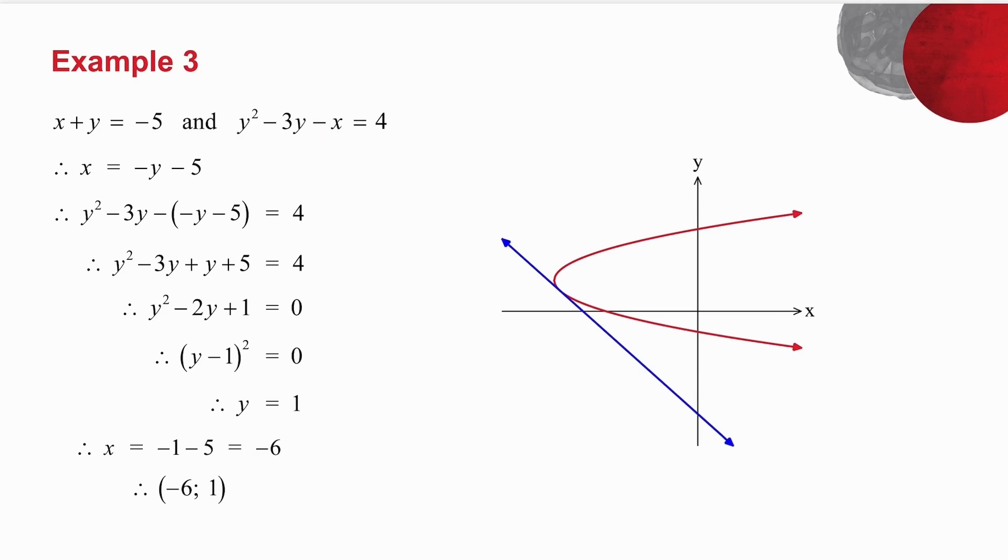So I'm going to make x the subject of the formula, because then I only have to substitute it once, and I don't need to square anything. So if I make x the subject of the formula, I get minus y minus 5.